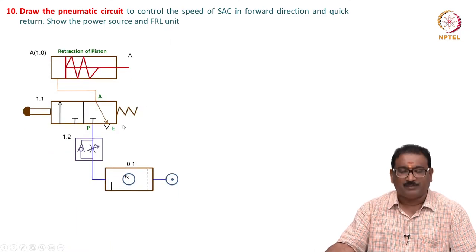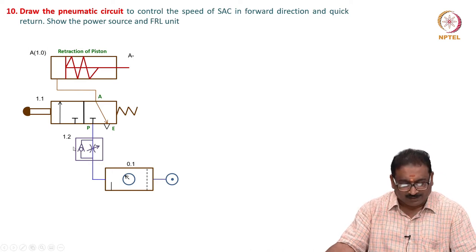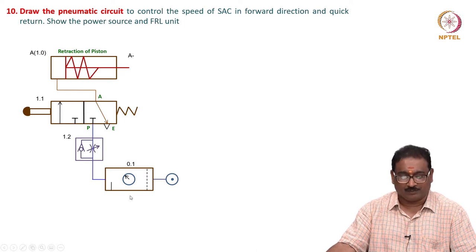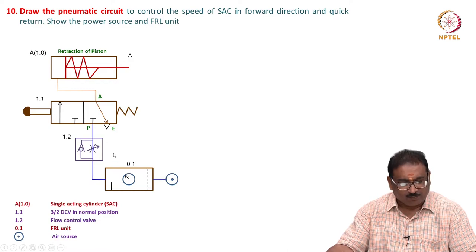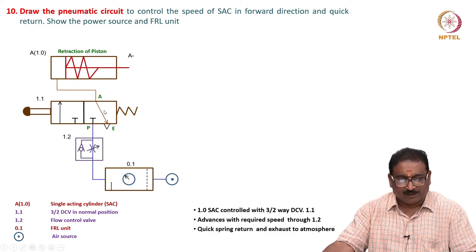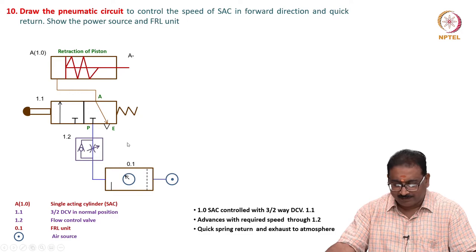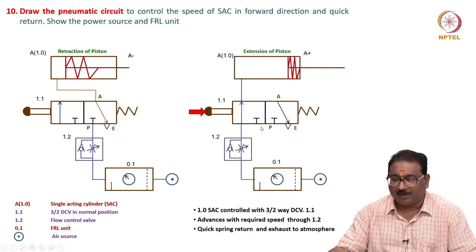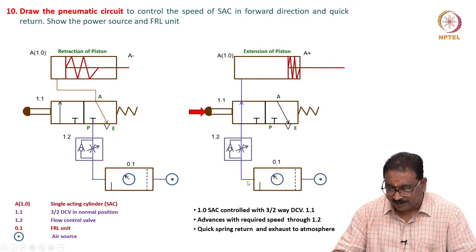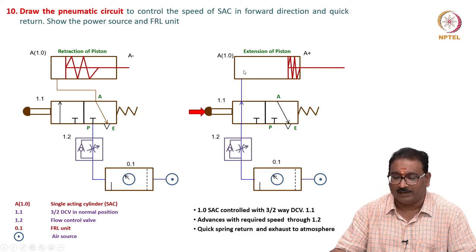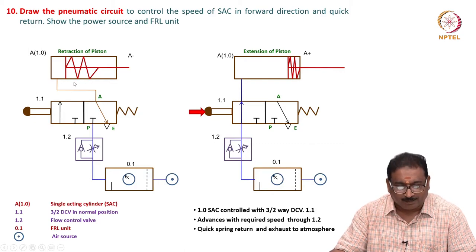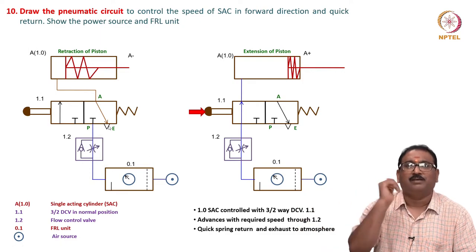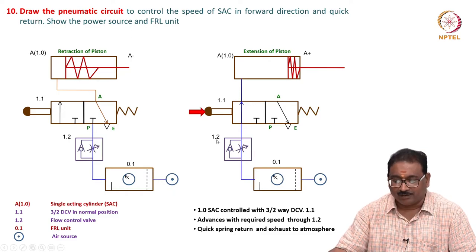Very simple - we have seen these types of problems in hydraulics also. Same thing here - 1.2 is a flow control valve. It is a single-acting cylinder controlled through a 3/2 DCV with power source. The cylinder advances with a required flow rate, controlled through 3/2 DCV 1.1. When you press the button, air comes here, passes through the metered orifice at the required flow rate. Extension is at the required speed. Return is bypass - very quickly it will return. That is why I am placing the flow control valve 1.2 here.